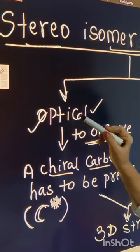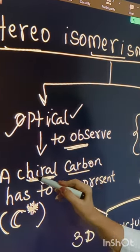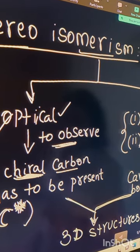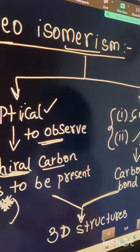If you want to observe optical isomerism, it is very important that you have a chiral carbon in the chemical compound, and the chiral carbon is represented as a carbon carrying an asterisk mark.